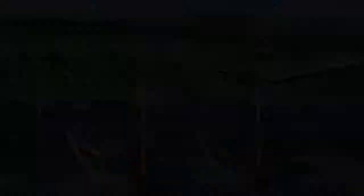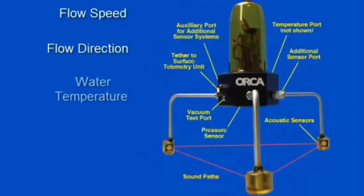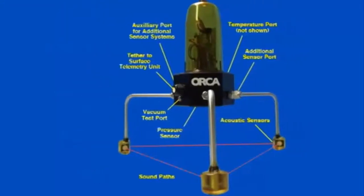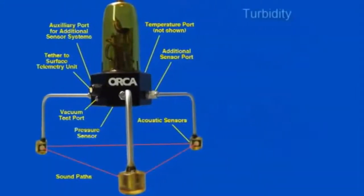The basic Kilroy sensor suite measures flow speed and direction, water temperature, water level, and reports GPS. We can also add an ORCA-designed turbidity sensor to measure how cloudy the water is and a bathyphotometer to measure bioluminescence.